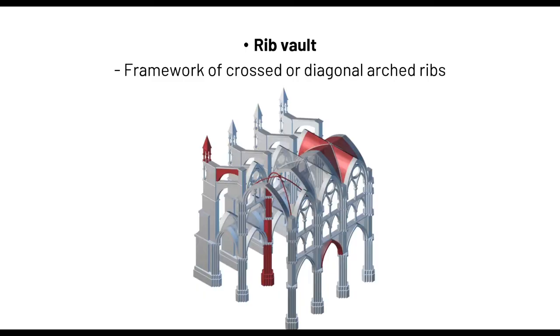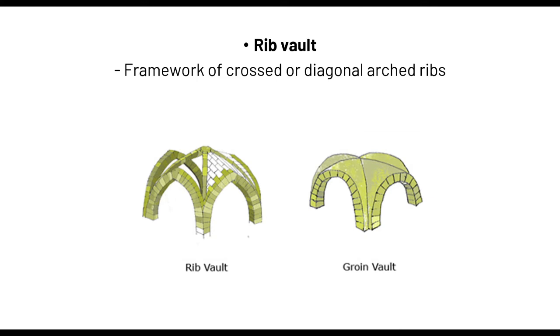In a more schematic sense, a rib vault has ribs at the intersection of the barrel vaults — a groin vault has a full barrel intersection only, while the rib vault emphasizes and adds structural members at the point where the two intersect. In real-life application, this is how a rib vault looks. Imagine the barrel vault that has been crossed and then fitted with ribs — that is your rib vault.